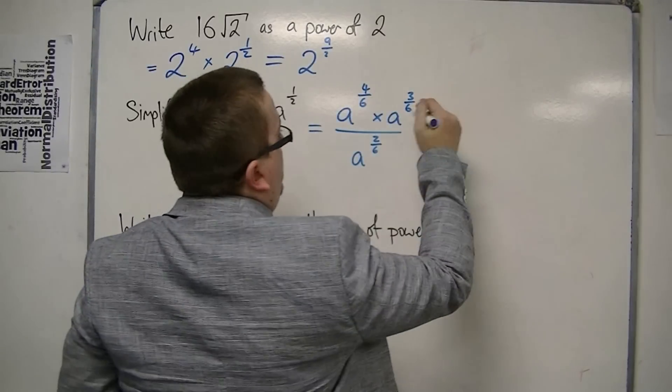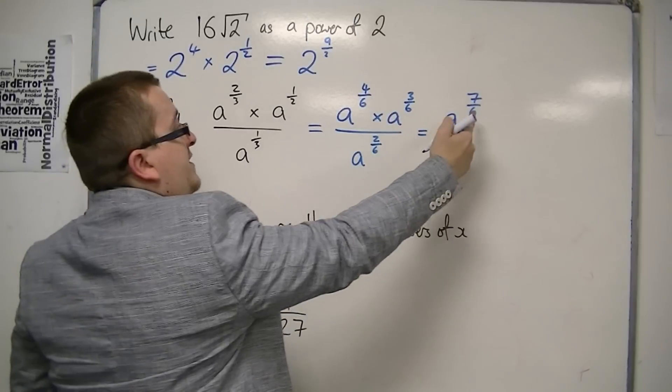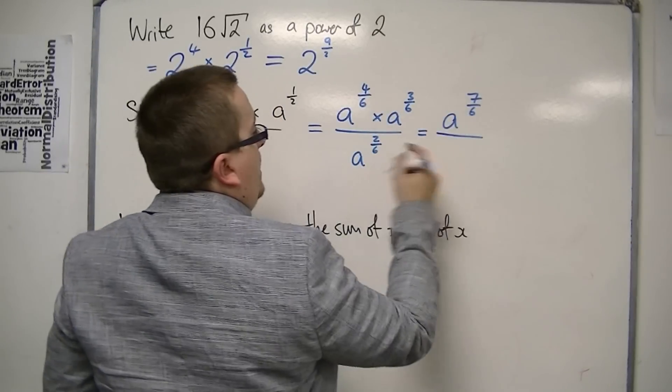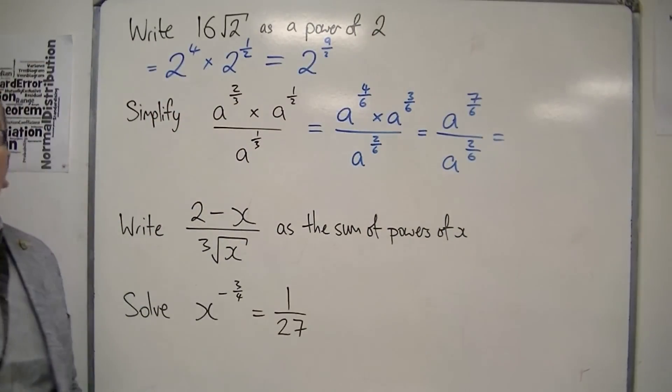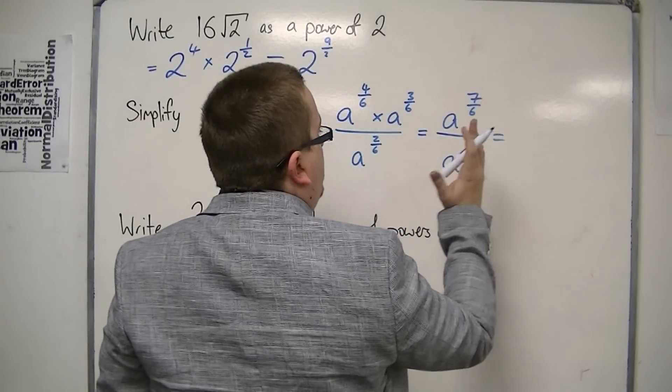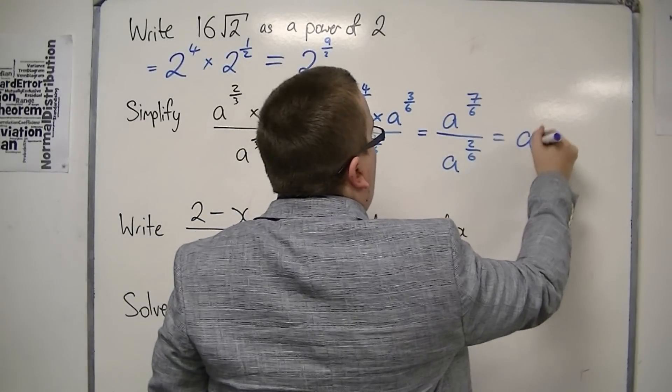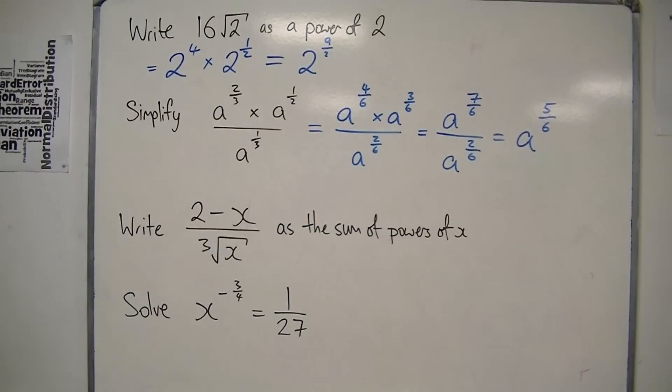We're adding the indices here, so we've got a to the 7 over 6. 4/6 plus 3/6 is 7 over 6, and then we've got a over 2/6. And now, because we're doing a division, the indices subtract. So, we've got a to the 7/6 divided by a to the 2/6 is a to the 5/6. And that's my final answer, as simplified as I possibly can do.